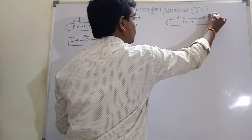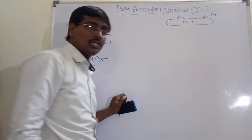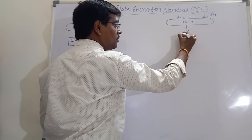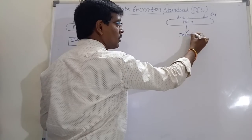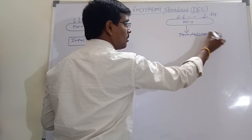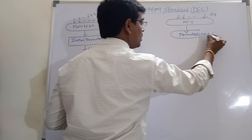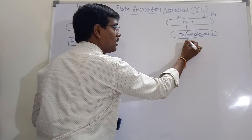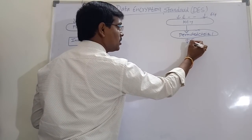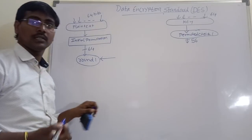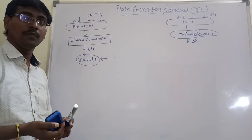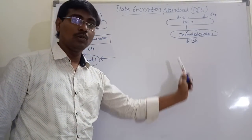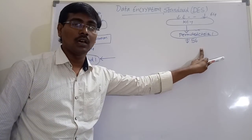Initially the size of the key is 64 bits. The key is applied to permuted choice 1. By applying permuted choice 1, the size of the key is reduced to 56 bits. The 64 bits are converted to 56 bits by simply removing all multiples of 8 from positions 1 to 64 — that is, positions 8, 16, 24, 32, 48, and 56 are removed.